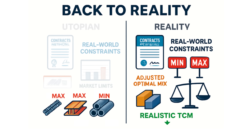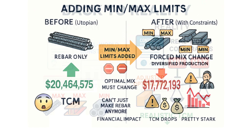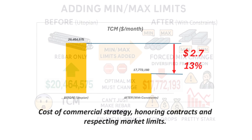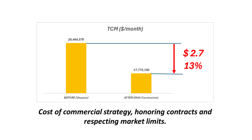But now snap back to reality. DemoSteel does have constraints — contracts they must fulfill, limits on how much the market will actually buy. The sales department knows you can't just sell infinite rebar. There are minimums for some products, maximums for others. When you add those real-world min-max sales limits into the simplex model, the achievable total contribution margin falls to $17,772,193 per month — a drop of almost $2.7 million a month, or about 13% from that utopian maximum.